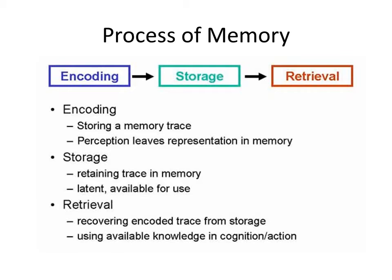Storage concerns the nature of memory stores — where information is stored, how long it lasts (duration), how much can be stored at any time (capacity), and what kind of information is held. The way we store information affects the way we retrieve it. There has been significant research on the difference between short-term and long-term memory. Storage is basically latent and always available for use. Memory retrieval refers to getting information out of storage. If we can't remember something, it may be because we are unable to retrieve it. Retrieval basically refers to using available knowledge in cognition and action.